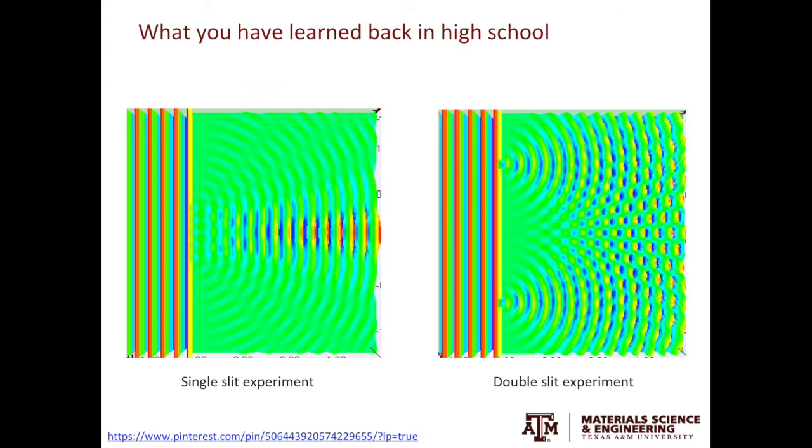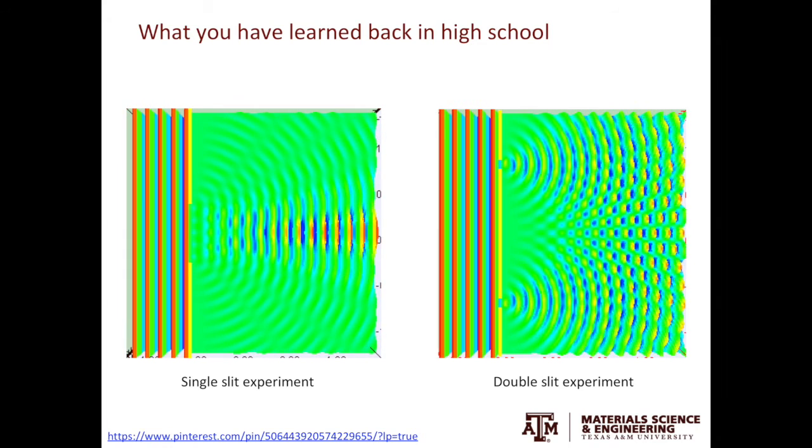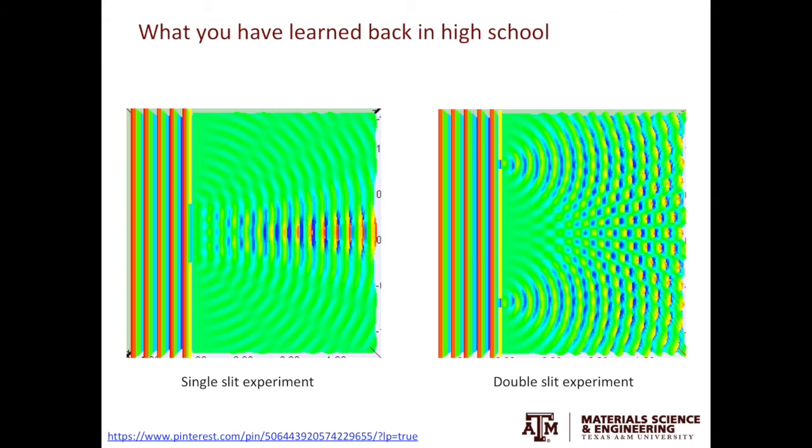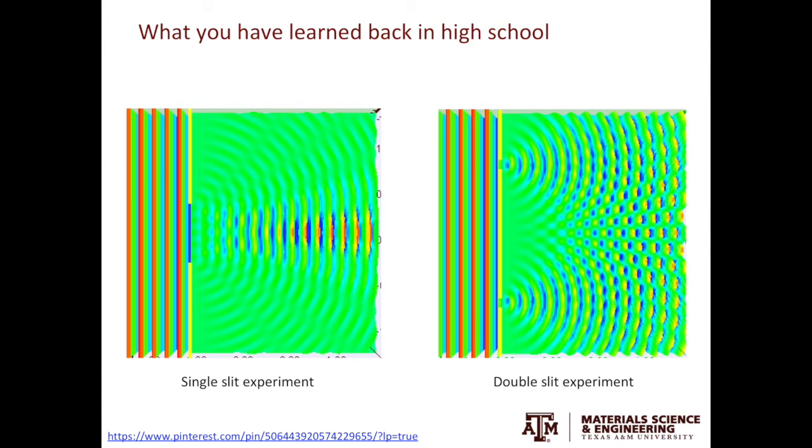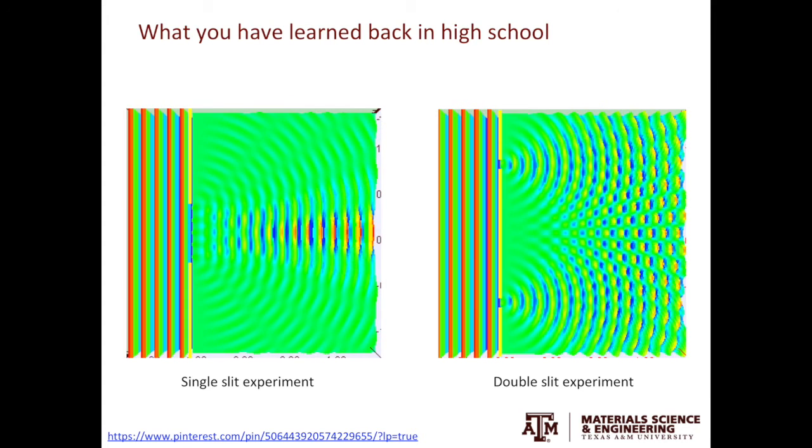You start with a plane wave with uniform intensity. After passing the slit or slits, the intensity of the wave is not uniform anymore and you can see periodic patterns.